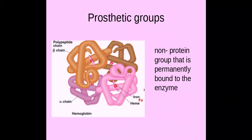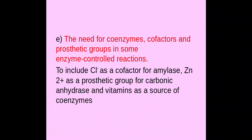A prosthetic group — for this we have iron acting as a prosthetic group in hemoglobin. There are four prosthetic groups within hemoglobin: four heme groups made up of iron. A prosthetic group is a non-protein group that is permanently bound to a particular protein or enzyme and has a particular function in that protein. Within hemoglobin, that prosthetic group is used to help carry oxygen around the body.